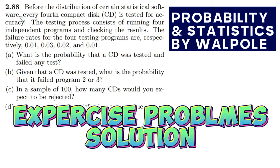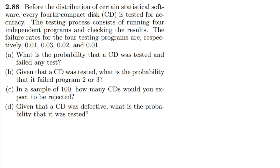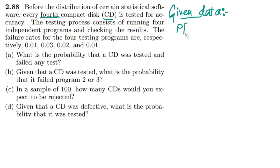Welcome back. This is question 2.88. The problem states that before the distribution of a certain statistical software, every fourth compact disk is tested for accuracy — so every fourth CD has to be tested before distribution. The probability of testing is 1 out of 4, which is 0.25. The testing process consists of running four independent programs and checking the results.